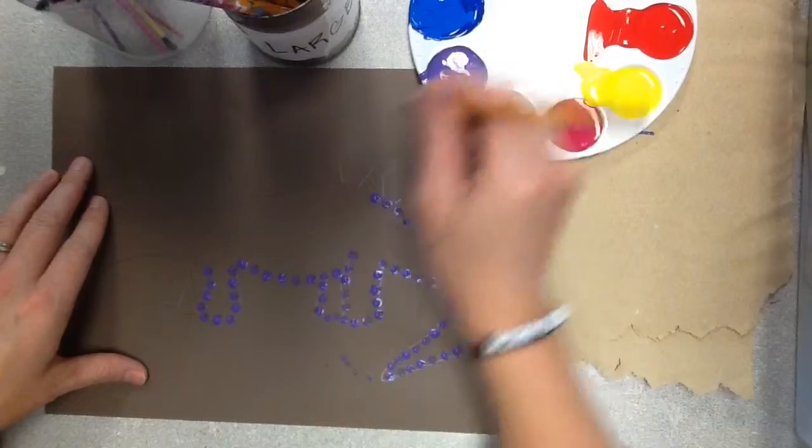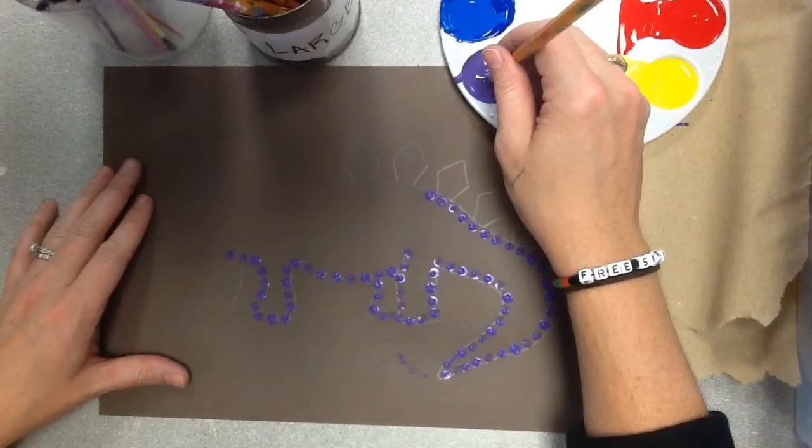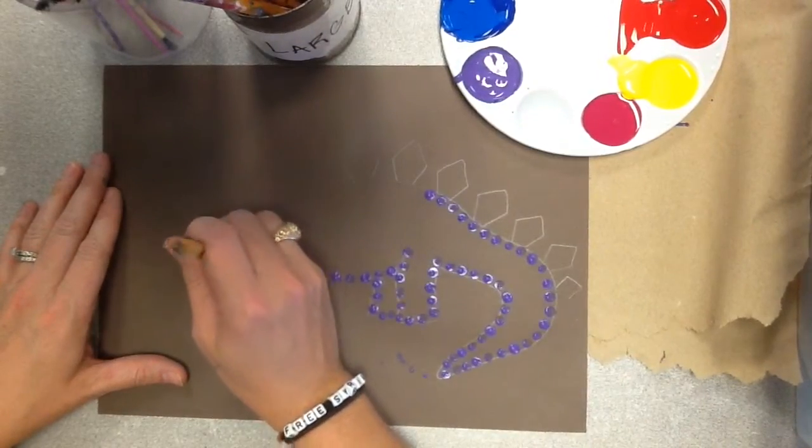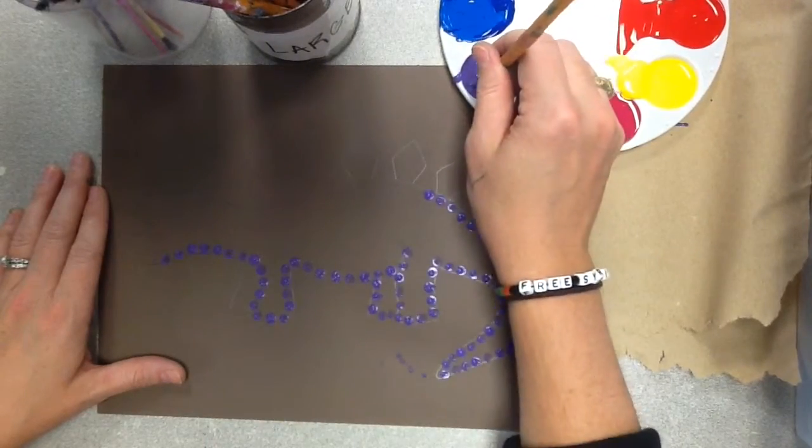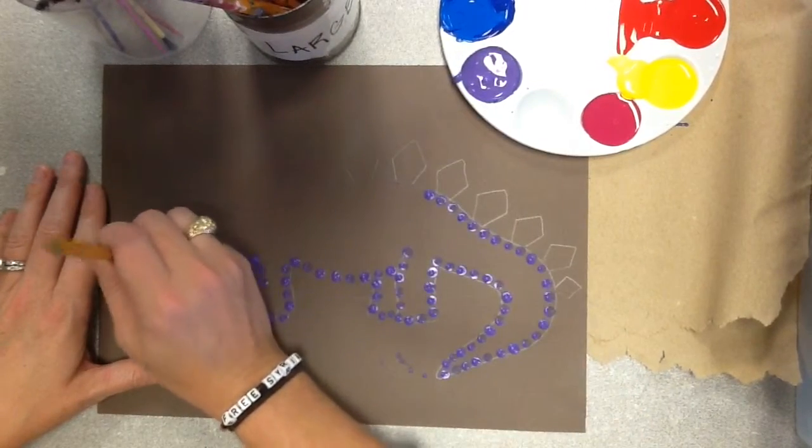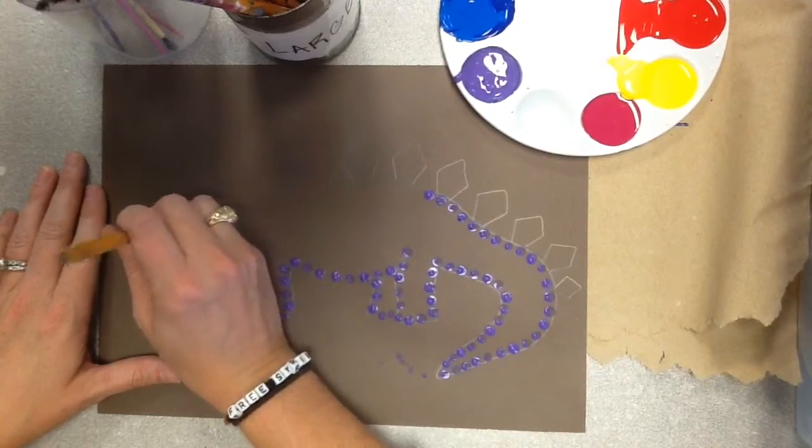And if you wanted to start with a smaller dot, you could certainly do that. You don't have to do the bigger dots for your outline. You could do the smaller ones. It's totally up to you. And you can change the size of your dots or you could keep the same size dots for your entire project. Again, that is totally your choice.